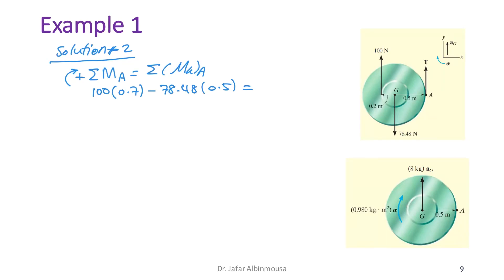The right-hand side has I_G·α plus m·a_G times the perpendicular distance: 0.98·α + 8·a_G × 0.5.